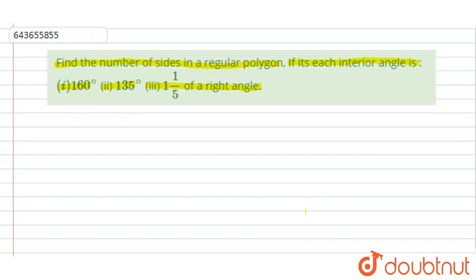So first of all, we will use a formula here to find the value of number of sides. The formula that we will use here is in case of regular polygon, the interior angle i is given by (n minus 2) into 180 degree divided by n. This is the value of each interior angle in a regular polygon where this n is nothing but number of sides.